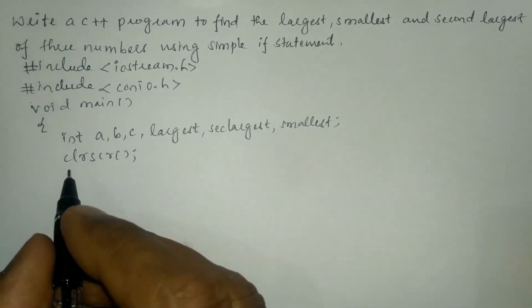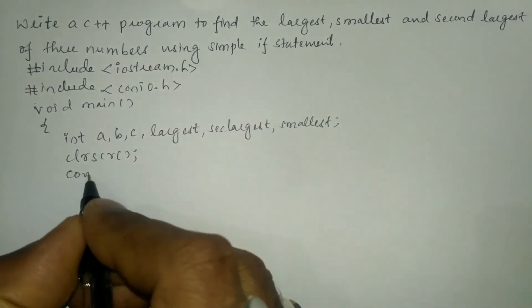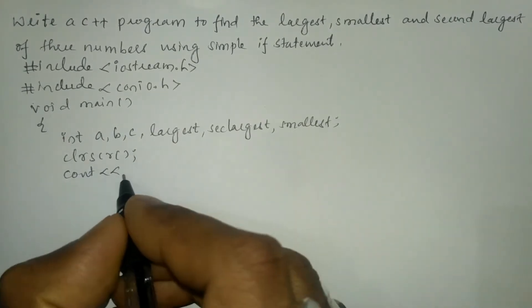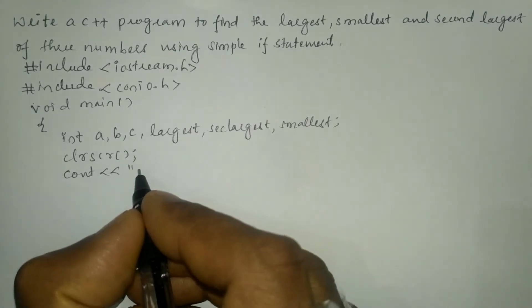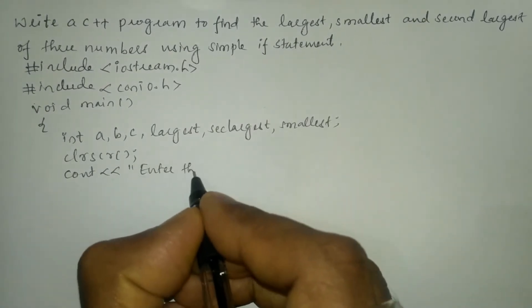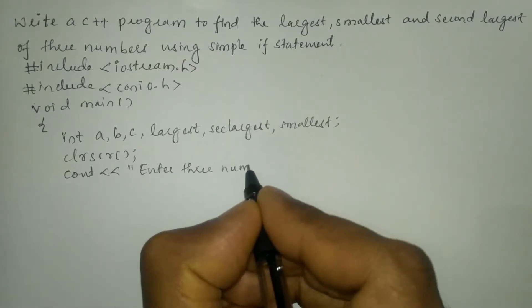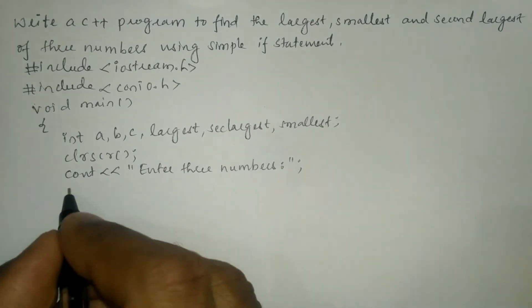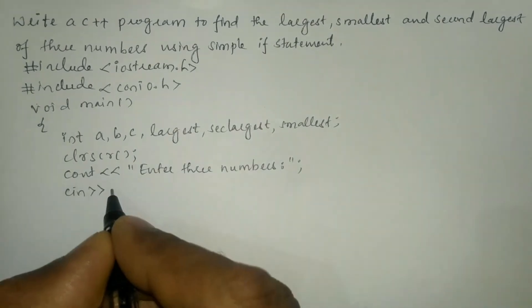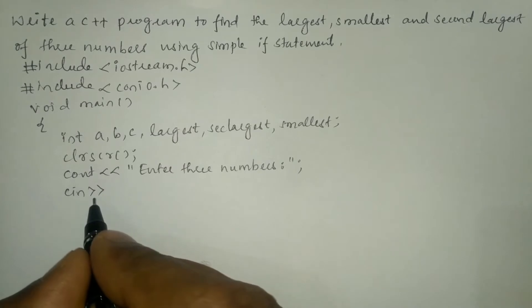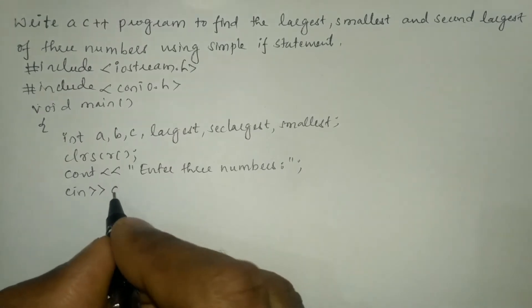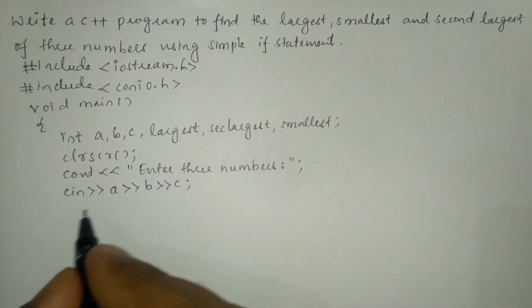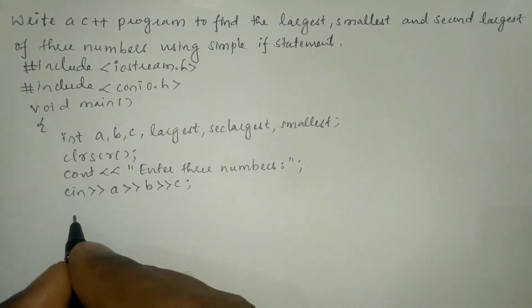Now we're going to write the clrscr() function which is used to clear the screen. Next we will ask the user to enter three numbers using the cout statement with the stream insertion operator and a string in double quotation marks, followed by a semicolon. We receive the input from the user through the keyboard using the cin statement with stream extraction operators for a, b, and c, then a semicolon.